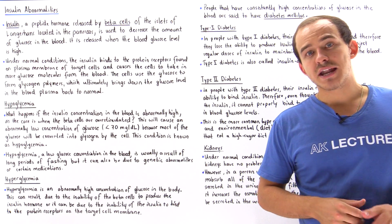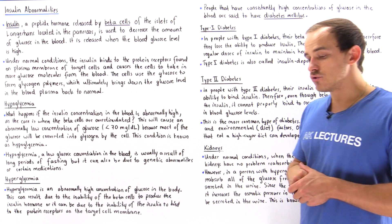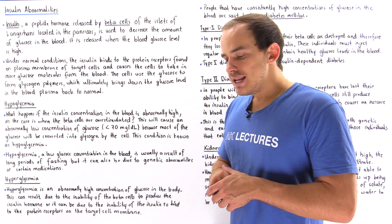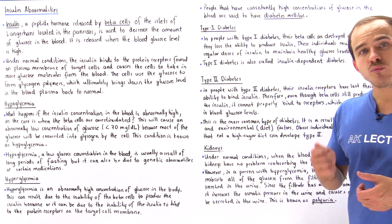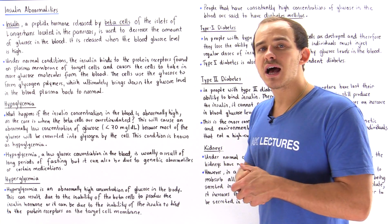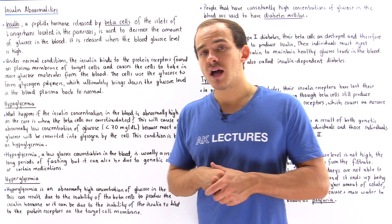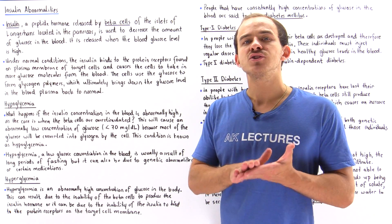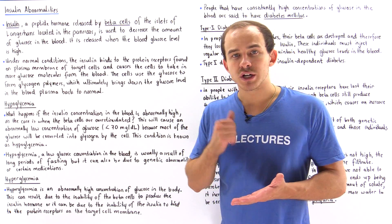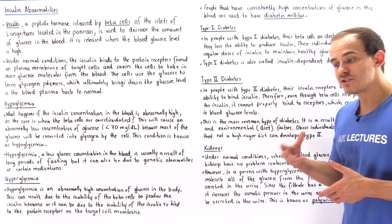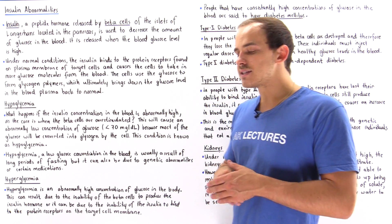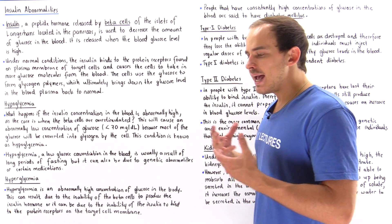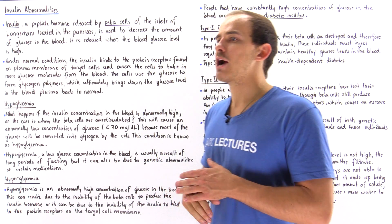Insulin is a peptide hormone produced by specialized cells known as beta cells, found in the islets of Langerhans of our pancreas. Insulin is released when we have a high concentration of glucose inside our blood plasma, and what insulin does is decrease the concentration of glucose inside the blood plasma back to a normal value of about 100 milligrams per deciliter. Ultimately, insulin maintains and regulates a healthy concentration of glucose inside our blood plasma.